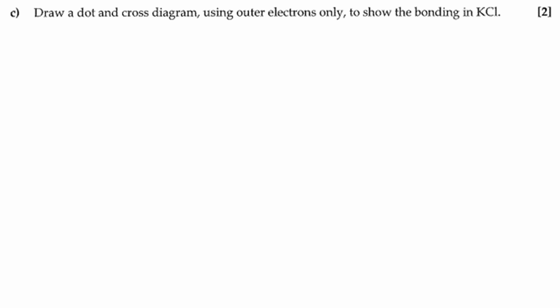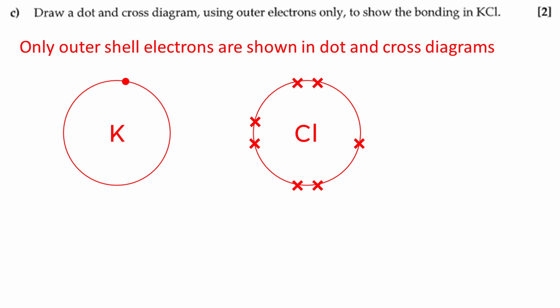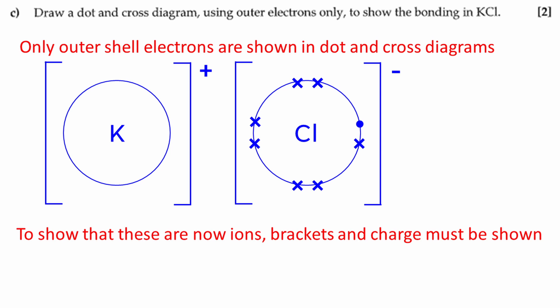Next, we have to draw a dot and cross diagram to show the bonding in KCl. Potassium is in group 1 and has one outer shell electron. Chlorine is in group 7 and has seven outer shell electrons. Use different symbols to show the outer electrons on each atom. The diagram is now complete.